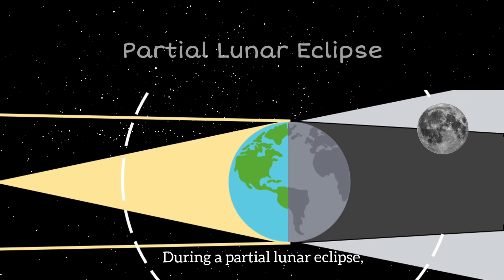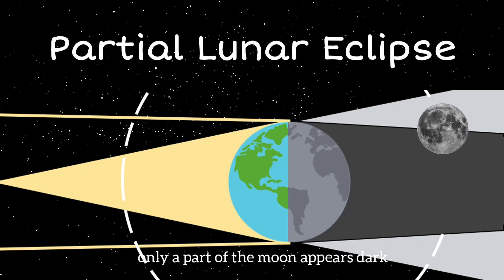During a partial lunar eclipse, only a part of the moon appears dark while the rest is lighter.